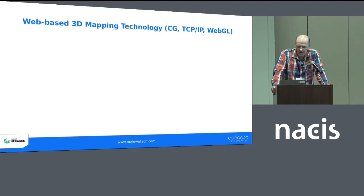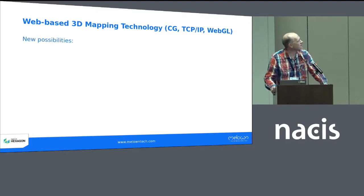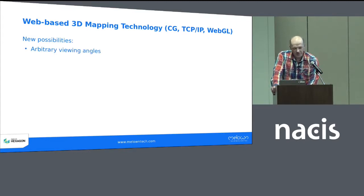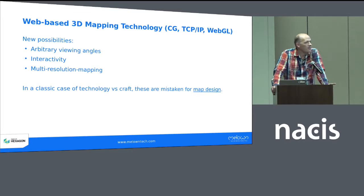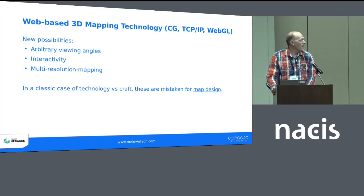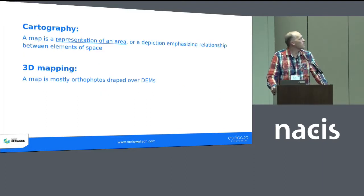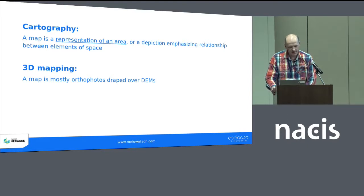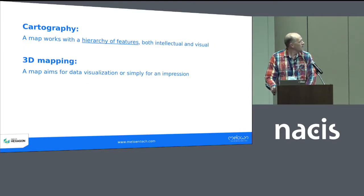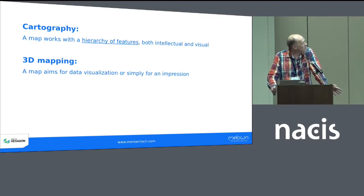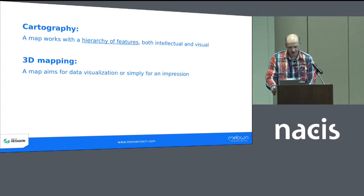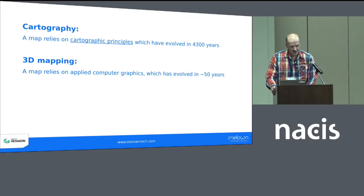Does this mean that web-based 3D mapping technology is actually all bad? It doesn't. It's given us so many new possibilities, such as arbitrary viewing angles, interactivity, and multi-resolution mapping. But the problem is that in a classic case of technology versus craft, these are mistaken for map design, which they are not. For a cartographer, a map is a representation of an area or a depiction emphasizing relationships between elements of space. For 3D mapping technologies, a map is orthophotos draped over DEMs. For a cartographer, a map works with a hierarchy of features. For 3D mapping technologies, a map aims for data visualization or simply for an impression. For a cartographer, a map relies on cartographic principles which have evolved over thousands of years, while for 3D mapping technologies, a map relies on applied computer graphics, which have evolved in 50 years.